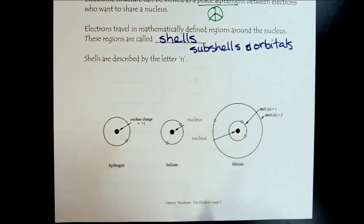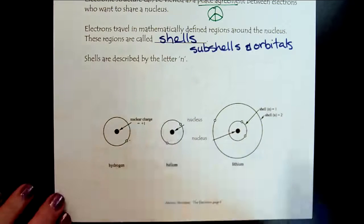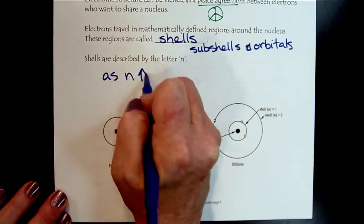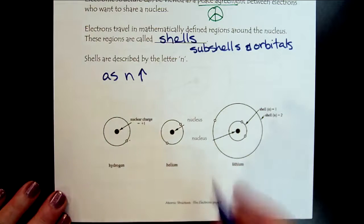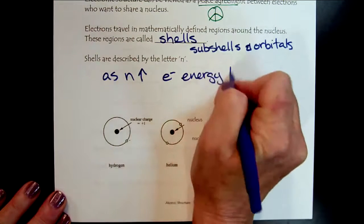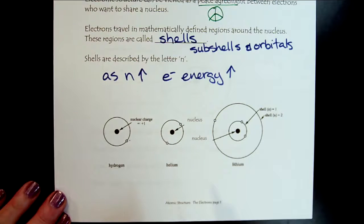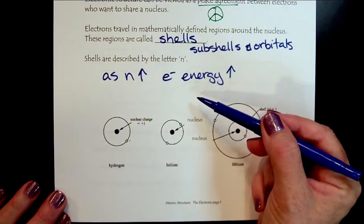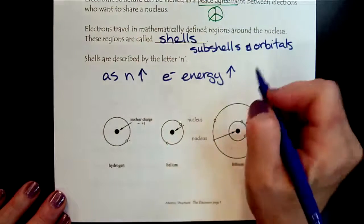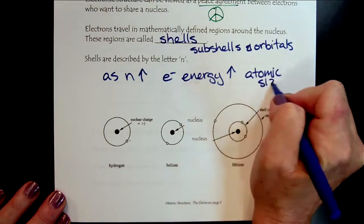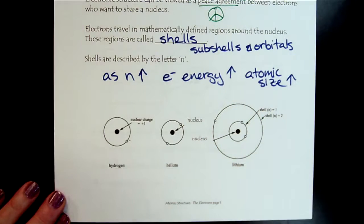So this N, I think it's pretty logical. As N increases, as the value of N goes up, the electron energy also increases. So we have a direct relationship there. And if electrons have more energy, that means they're moving more in a bigger space, we get a larger atomic size. So fortunately, everything's a direct relationship.